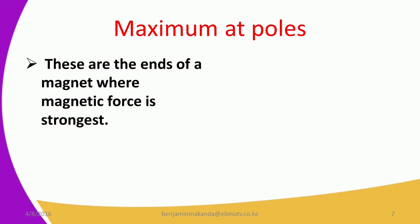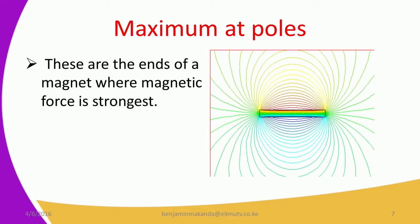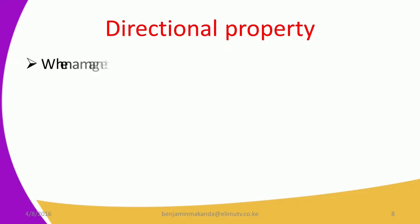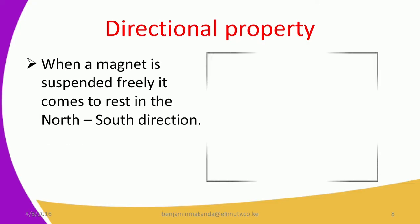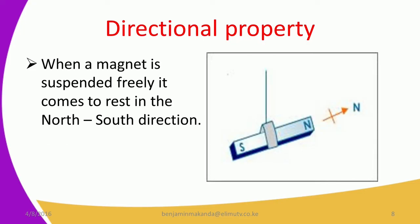At the ends of magnets, the magnetic force is strongest. The concentration of the field lines shows the direction of force — at the end of the magnet the magnetic lines of force are concentrated and close together, showing that the force is maximum at the poles. For the directional property, when a magnet is suspended freely it comes to rest in the north-south direction, with one end pointing north and the other to the south.